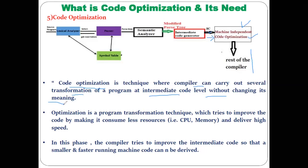This is called machine independent code optimization because we perform this optimization before the code generation phase, which is the last phase of the compiler. During this code optimization, the compiler does not consider anything related to the machine's instruction set or registers. Since the changes made do not depend on any machine properties, this optimization is called machine independent optimization.